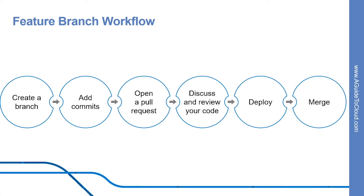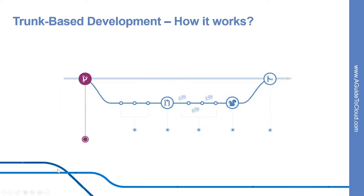Since master is the only special branch, storing several feature branches on the central repository doesn't pose any problems. This is also a convenient way to back up everybody's local commits. The trunk-based deployment workflow assumes a central repository, and the master represents the official project history. Instead of committing directly on their local master branch, developers create a new branch every time they start work on a new feature.